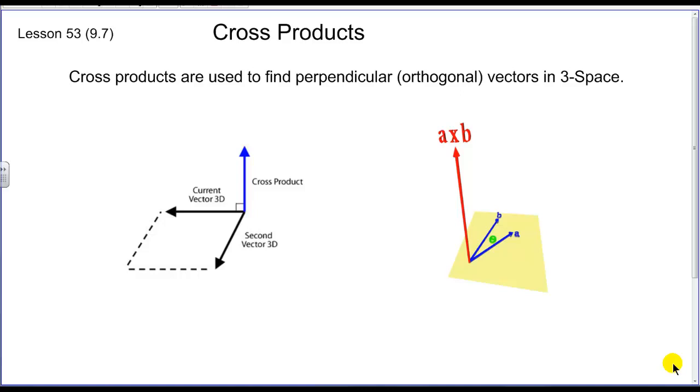We are going to talk about cross products today, and those are used to find whether or not vectors in three-dimensional space are actually perpendicular. So as you can see in the two drawings, I have two vectors in a flat plane, so in this case over here, we have these two black vectors on a flat horizontal plane, if you will, and then this perpendicular vector to that plane coming up on the z-axis.